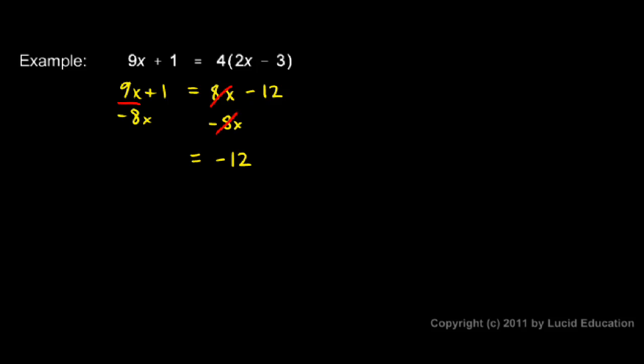On the left I have 9x minus 8x which is 1x. And I also still have this plus 1. So I have x plus 1 equals negative 12.